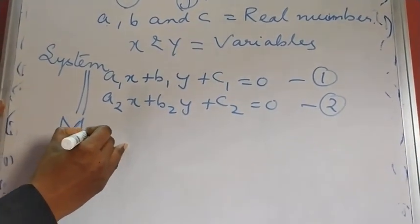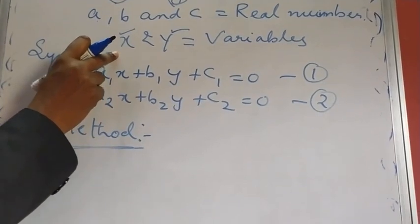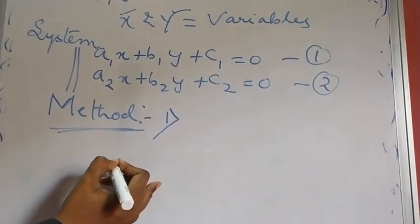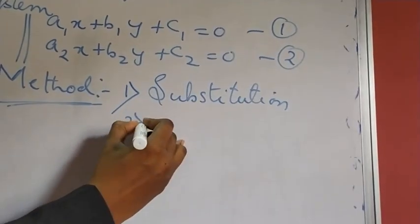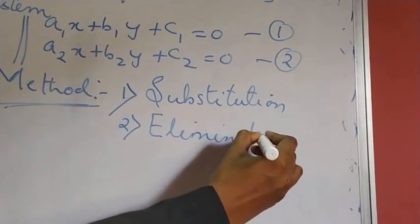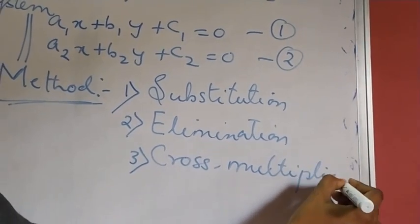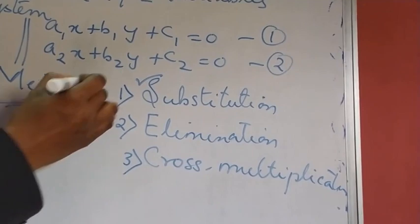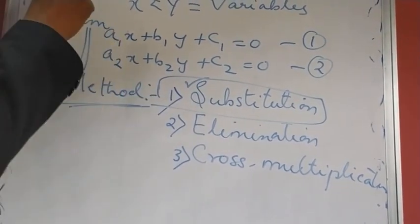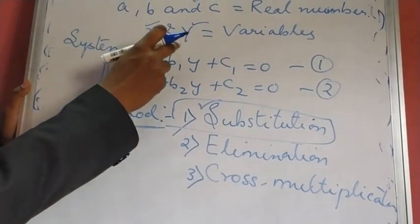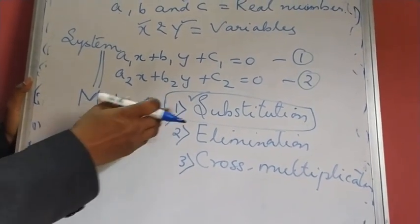The objective of this lesson is that you will be learning three different methods to find out the value of the variables X and Y. The three methods we will be discussing are the substitution method, the elimination method, and the cross multiplication method. Today I will be teaching you the substitution method specifically — how by following the substitution method we can find the values of X and Y for any given pair of linear equations.